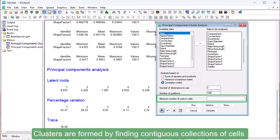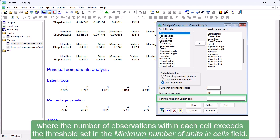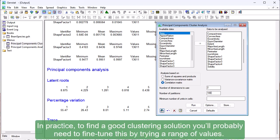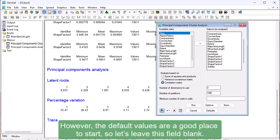Clusters are formed by finding contiguous collections of cells where the number of observations within each cell exceeds the threshold set in the minimum number of units in cells field. Leaving this field blank will produce cluster solutions over a range of numbers. In practice, to find a good clustering solution, you'll probably need to fine tune this by trying a range of values. However, the default values are a good place to start, so let's leave this field blank.